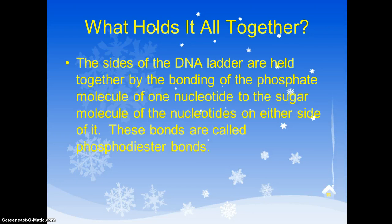So what holds it all together? The sides of the DNA ladder are held together by the bonding of the phosphate molecule of one nucleotide to the sugar molecule of the nucleotides on either side of it. Those bonds are called phosphodiester bonds. We learned that back in our biochem days. Hopefully that sounds familiar. Nucleotides do dehydration synthesis. They make a covalent bond called a phosphodiester bond.